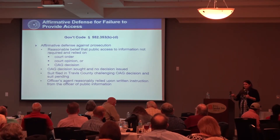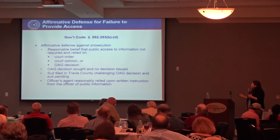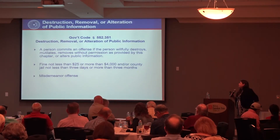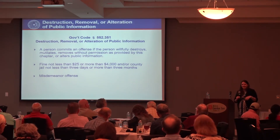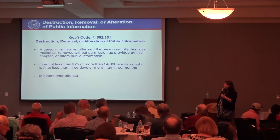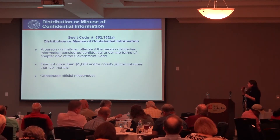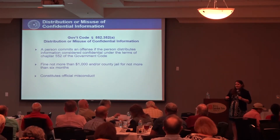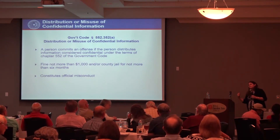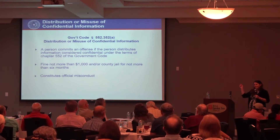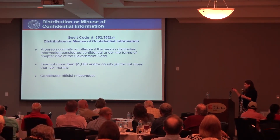It is also an affirmative defense if you sought a decision but one hasn't been issued yet — so you're within that 45-day window. Destruction, removal, or alteration of public information — getting a request and destroying the records instead of releasing them — is a separate misdemeanor offense. Distribution or misuse of confidential information — releasing confidential information like dates of birth or employee information without authorization — is a fine of not more than $1,000 and/or county jail time, and also constitutes official misconduct.